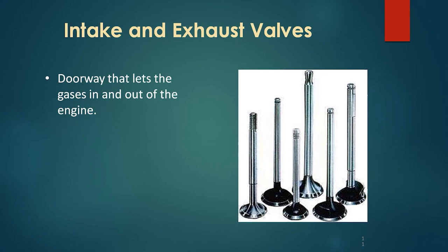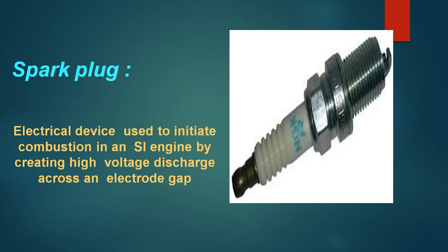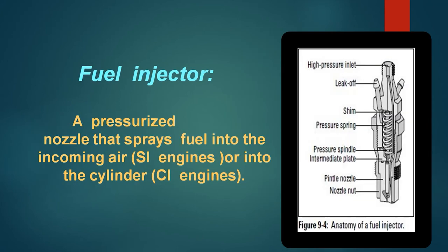The next part is the connecting rod, or con rod, which connects the piston to the crankshaft. Then the spark plug, which is an electrical device used to initiate combustion. In a petrol engine, to initiate combustion, we require a spark plug. In the case of a diesel engine, to initiate combustion, we require a fuel injector.